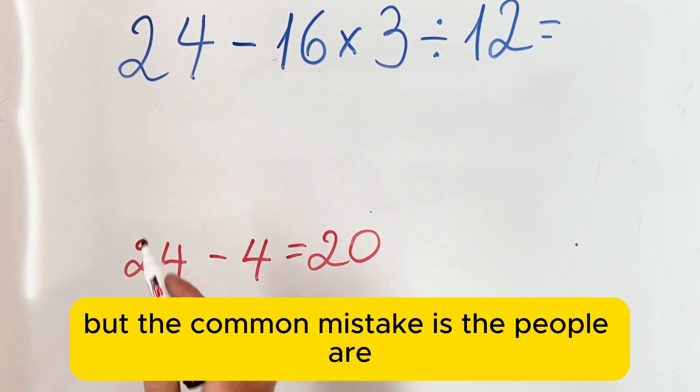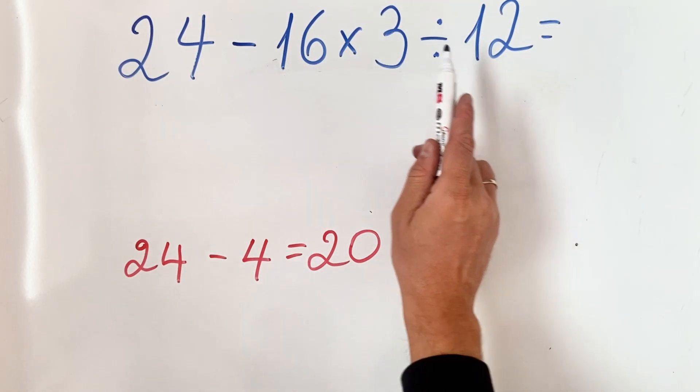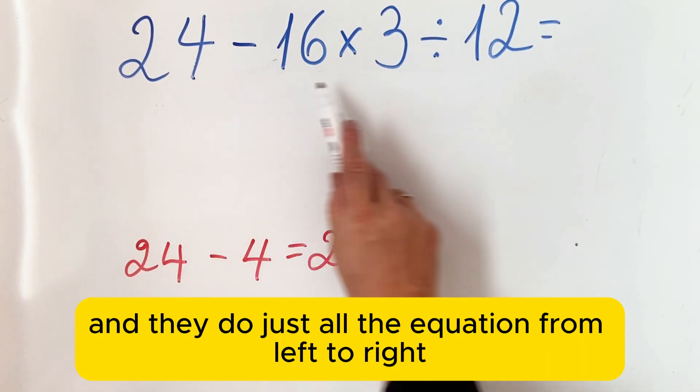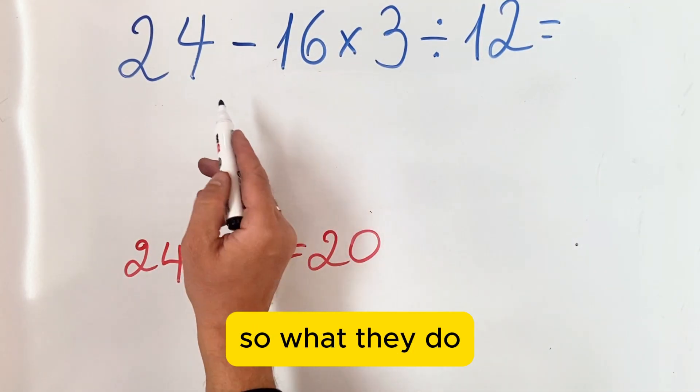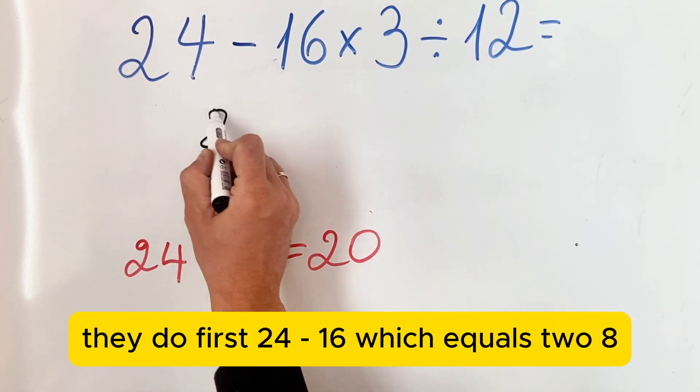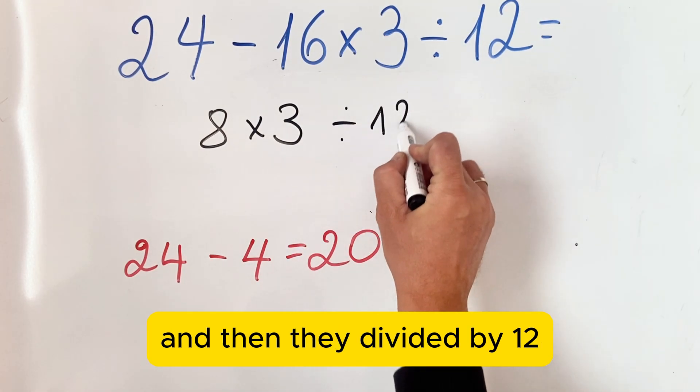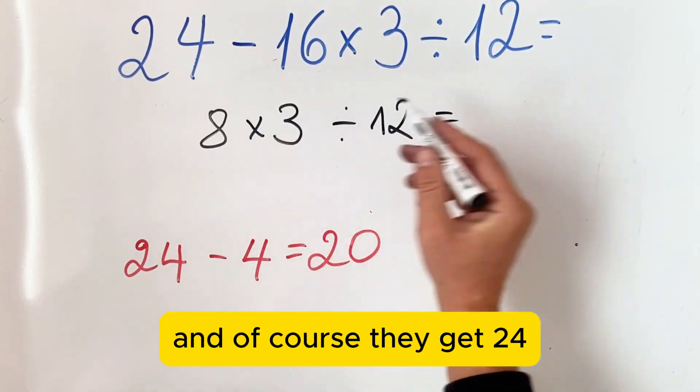But the common mistake is people are forgetting about the order of operation and they do just all the equation from left to right. So what they do is first 24 minus 16, which equals 8, then they multiply the 8 by 3, and then they divide it by 12.